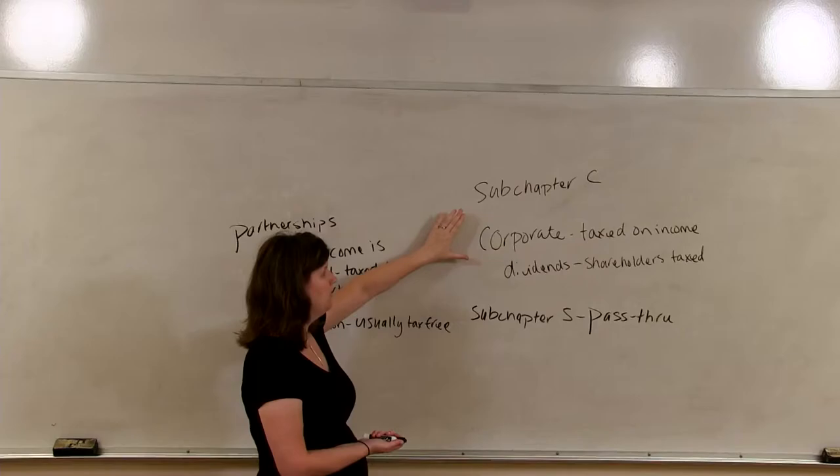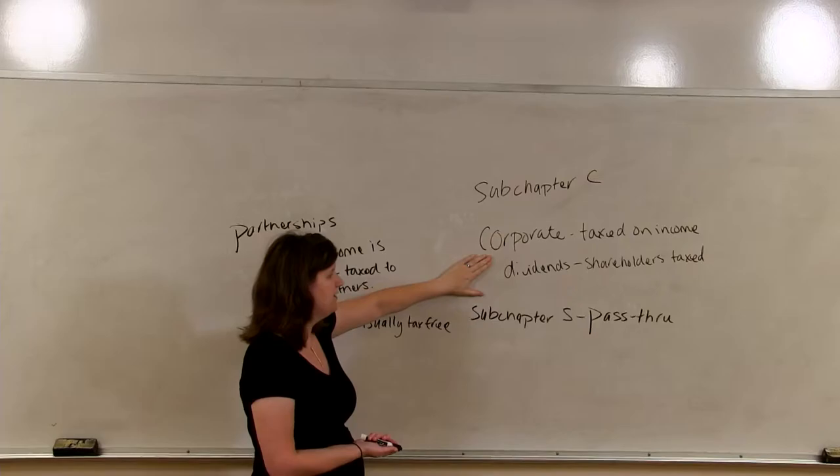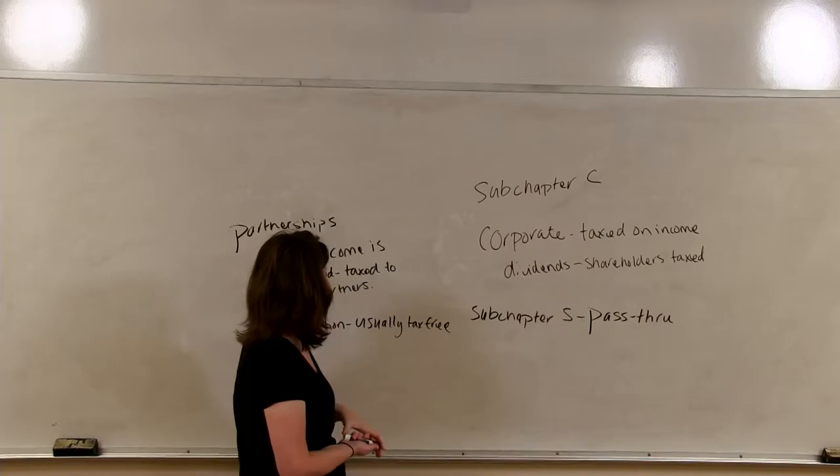With a C-Corp, which is where we will be spending the majority of our time, the income is taxed once to the corporation, when it is earned, and then twice, when dividends are distributed to the shareholders.